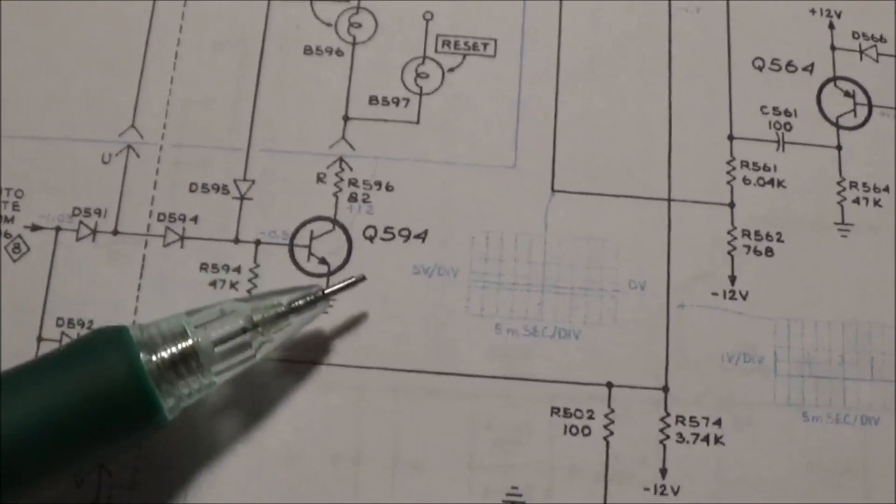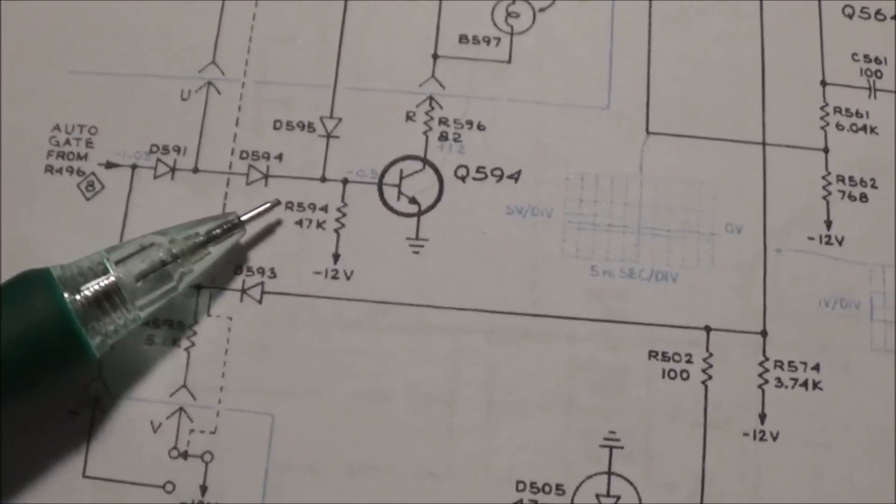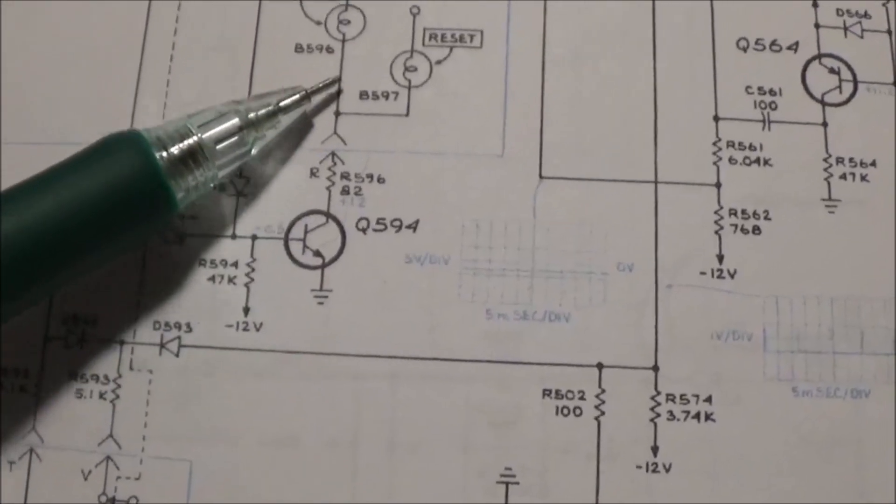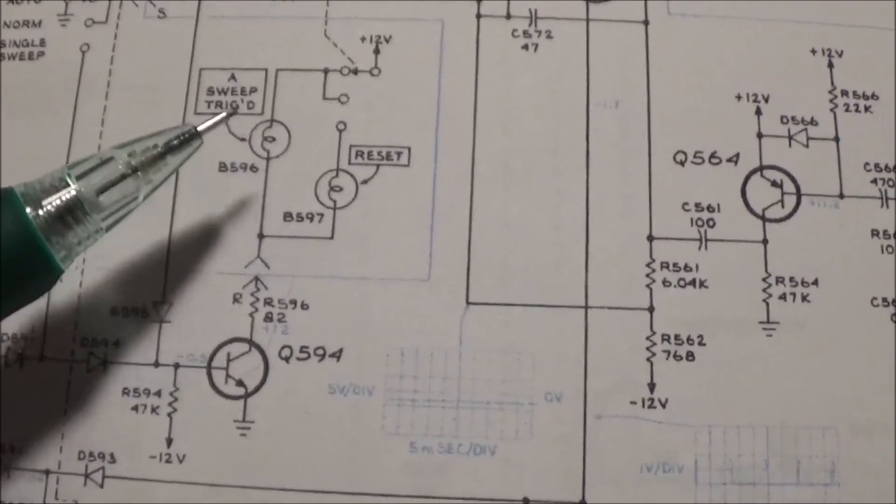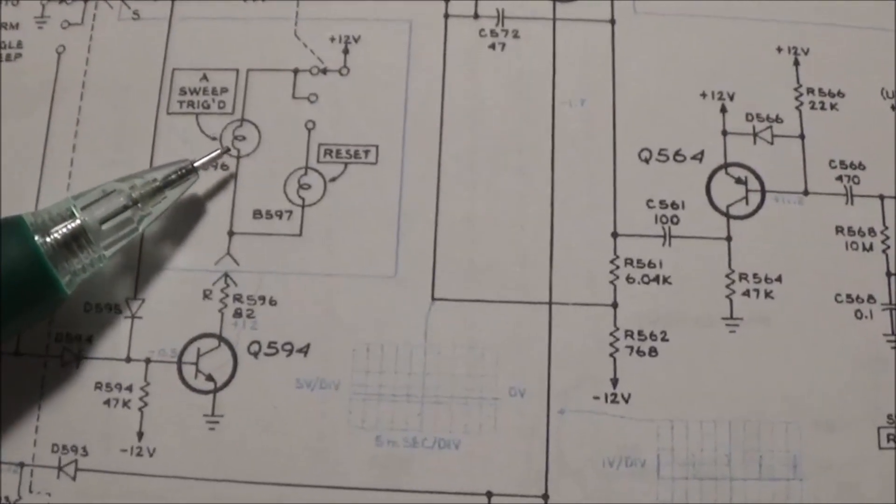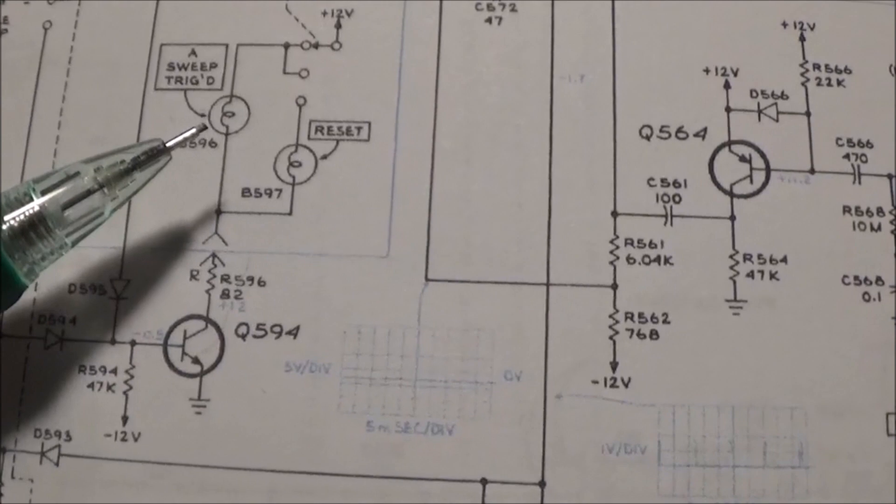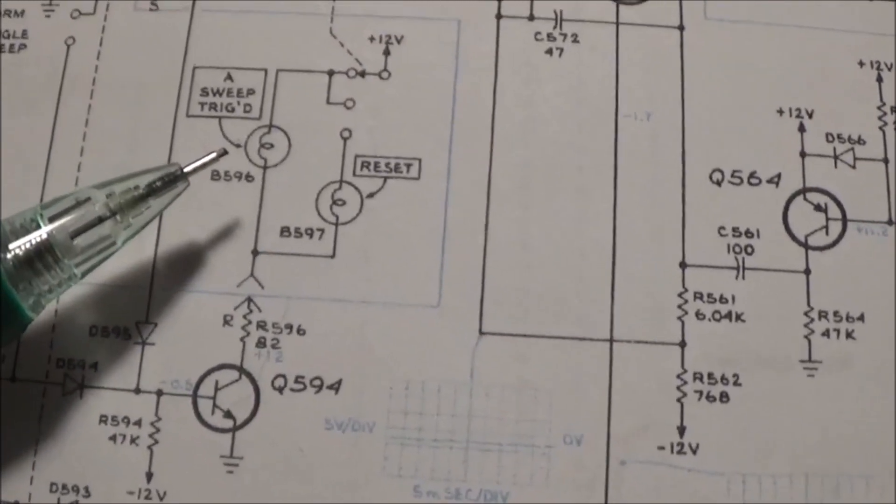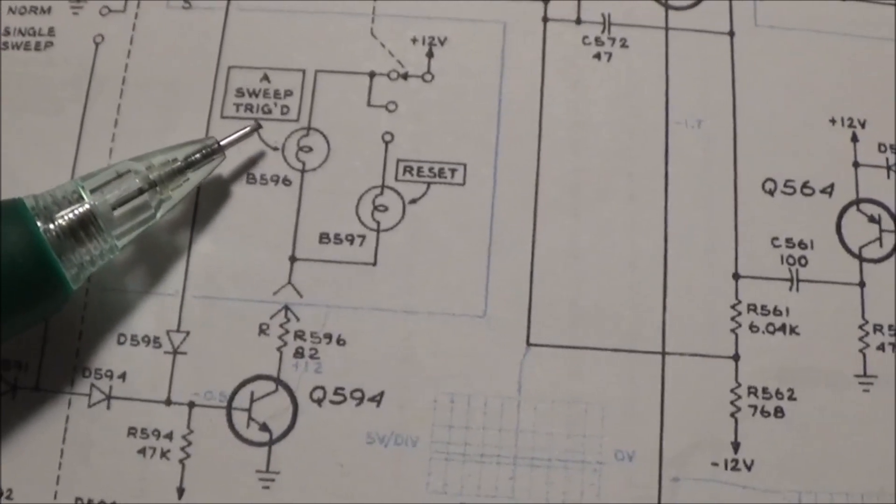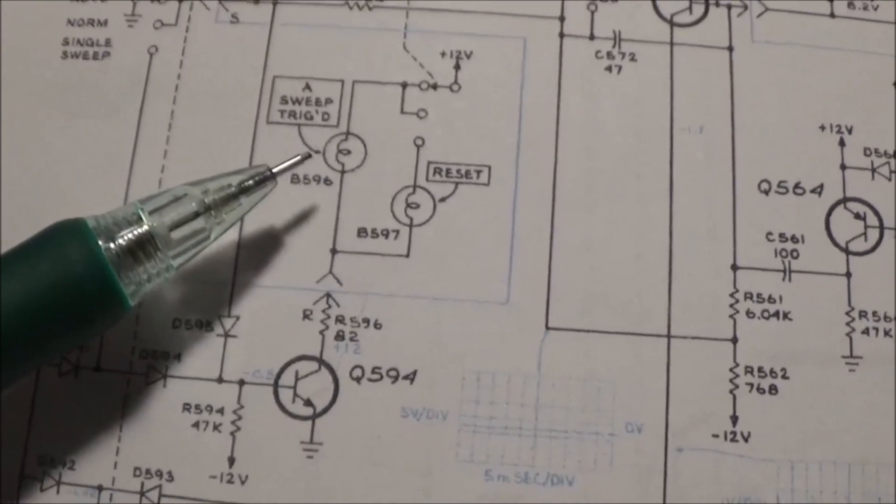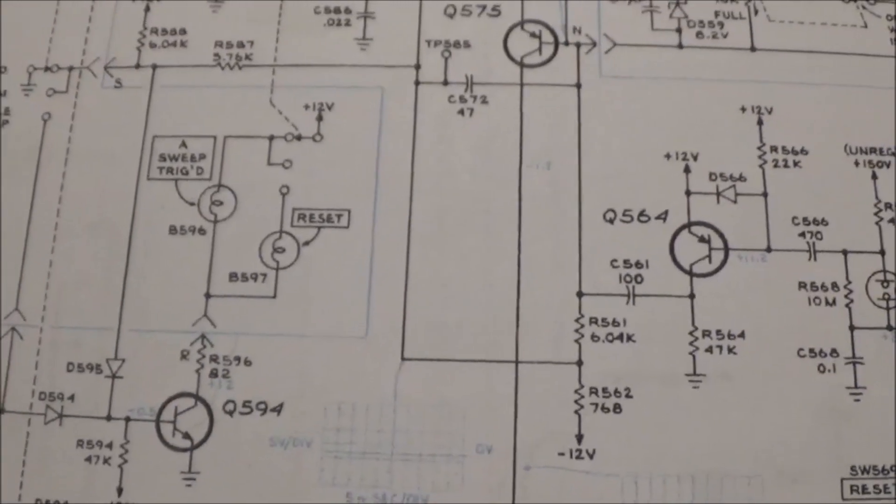Basically this transistor, whenever it receives a signal that the scope is triggered on a waveform, tells this little lamp to turn on. So this little bulb is constantly turning off and on and eventually it just burns out. I'm not surprised that it's burnt out. After all, the scope was built in 1969. It's been used who knows how long, how many hours it had on it before I got it.